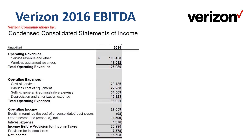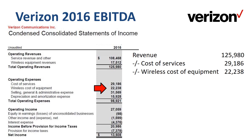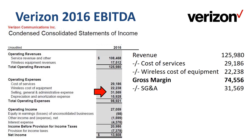In this example we will calculate EBITDA for telecom company Verizon. Method one is to go through the income statement from top to bottom. Revenue of $126 billion, minus cost of services of $29.2 billion, and minus cost of equipment of $22.2 billion, gets you to a gross margin of $74.6 billion, which is 59% of revenue. If we then deduct SG&A expenses of $31.6 billion, we get to EBITDA of $43 billion.